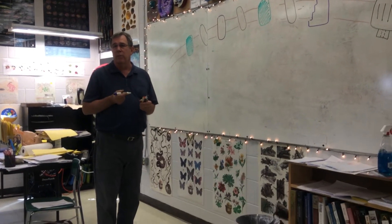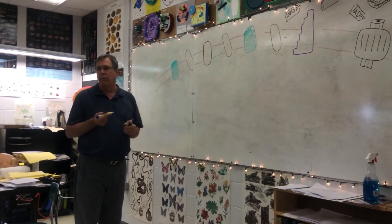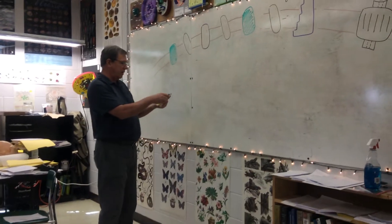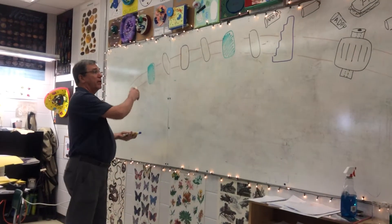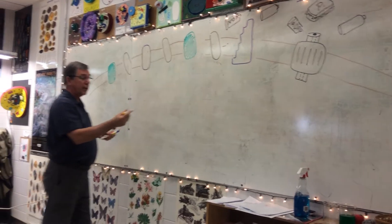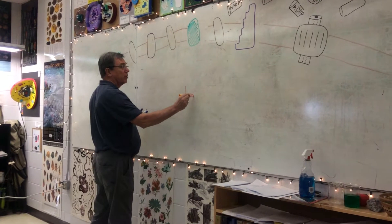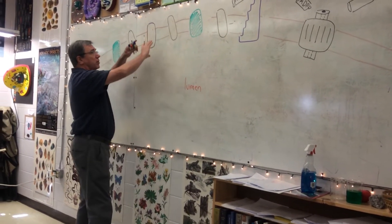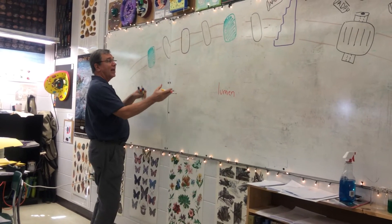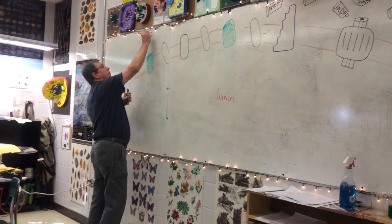What we're going to talk about first is the light-dependent reaction — it's the first stage in photosynthesis. We have the thylakoid membrane with protein stations stuck into it. In the middle of the thylakoid membrane is a space called the lumen, and the thylakoid itself floats inside the chloroplast. Outside the thylakoid is an area called the stroma.